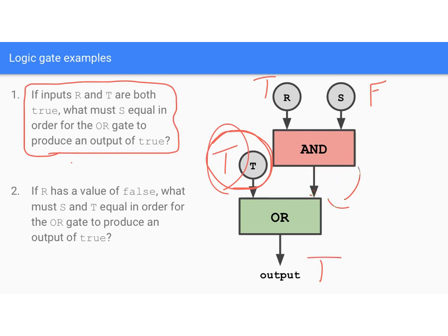If S were true, then since R and S are both true, the AND gate would return true, and true OR true still outputs true. So for the first question, it doesn't matter what S equals — S can be true or false. It does not matter.